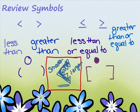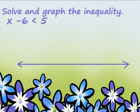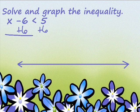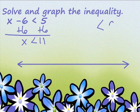Solve and graph the inequality. I'm going to solve this as if it was an equal sign. So I'm going to add 6 to both sides, and I get x is less than 11. Now let's remember: less than means an open circle or parentheses.